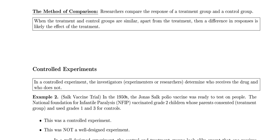One of the ways we like to compare is with a controlled experiment. In a controlled experiment, investigators or researchers determine who receives the drug and who does not. For example, they vaccinated grade two children whose parents consented — those are the treatment group. They used grades one and three for controls, meaning the people that were not vaccinated. This was a controlled experiment because the investigators decided who got the treatment and who didn't.